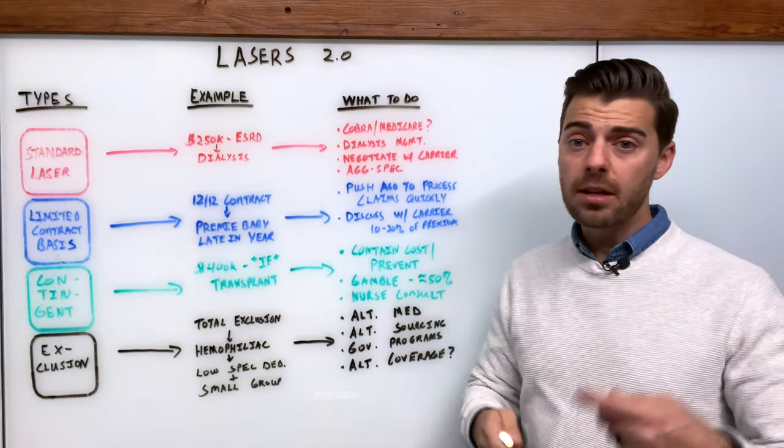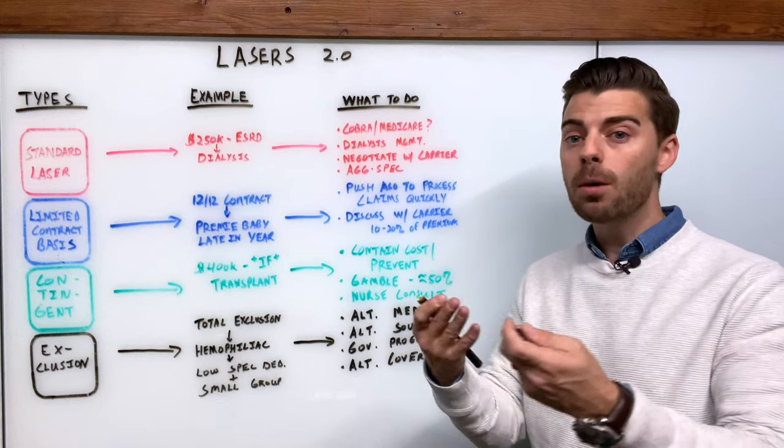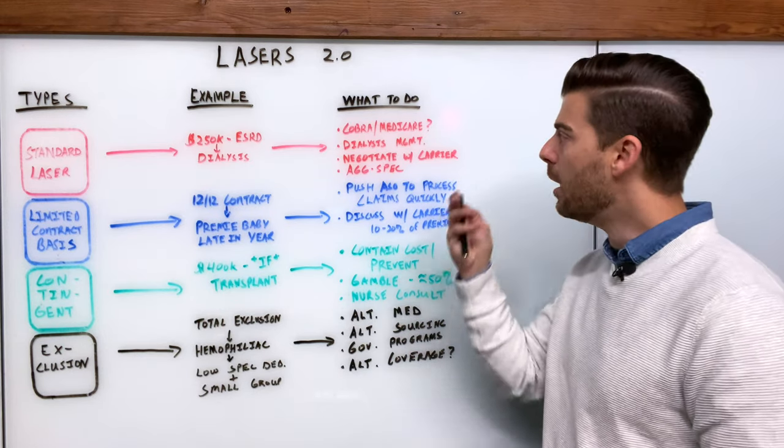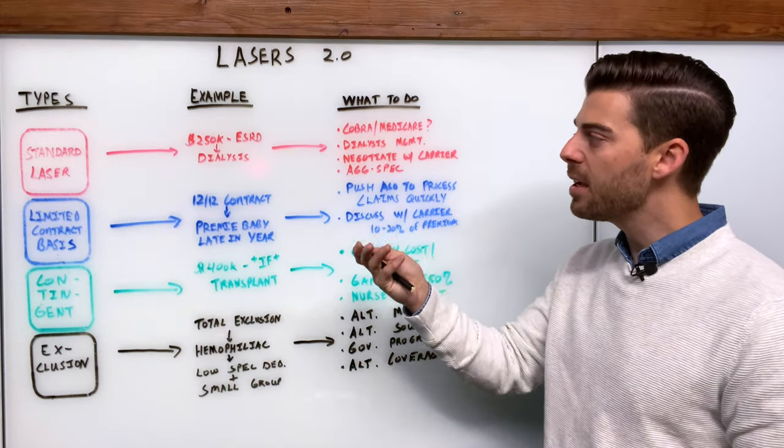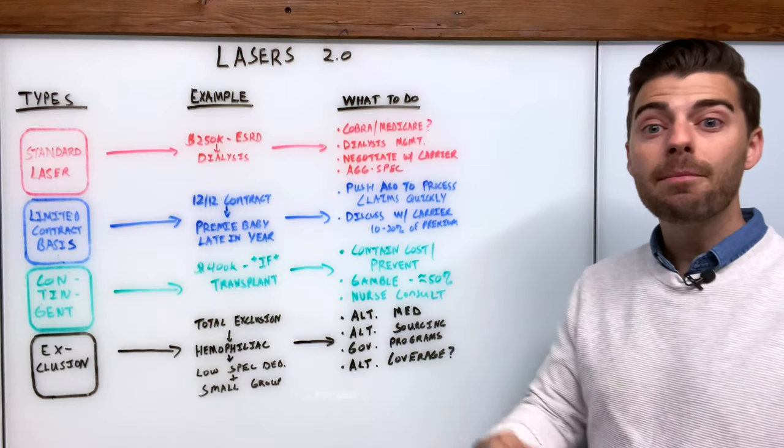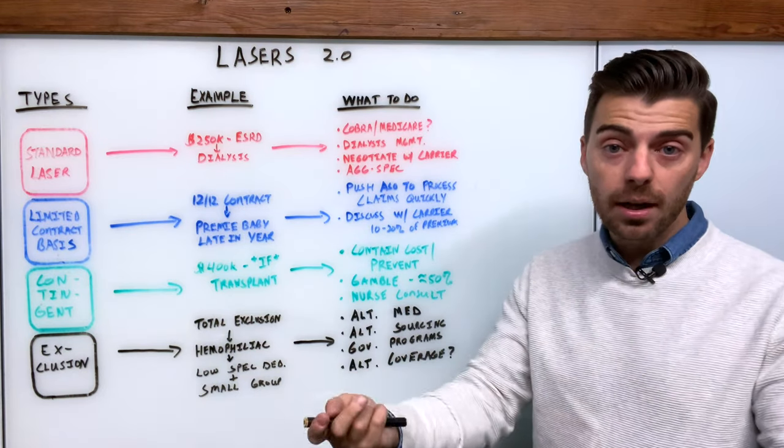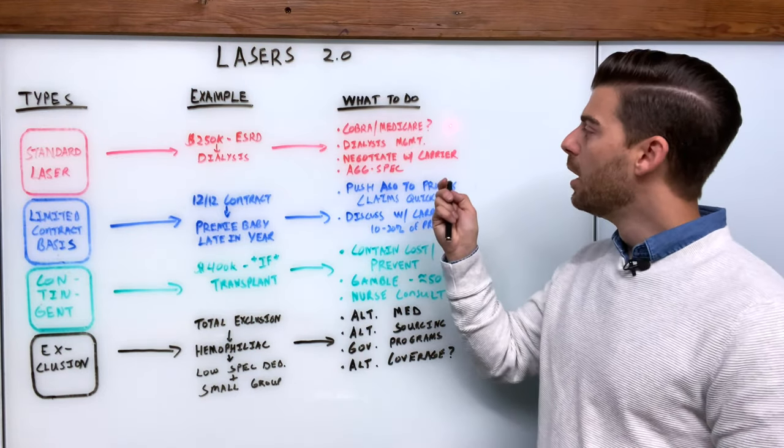So what do we do? First and foremost, I'd always ask the question: is this person on Cobra? Have they been on Cobra? Is Cobra about to run out for the coming year? Or are they eligible for Medicare? For instance, maybe a condition like ESRD where they're getting dialysis treatment and have been for a long period of time. Could they be Medicare eligible even if they're not old enough to be on Medicare otherwise?